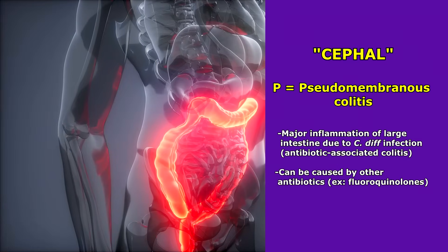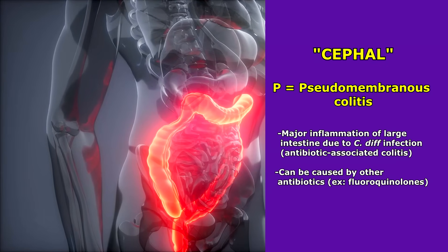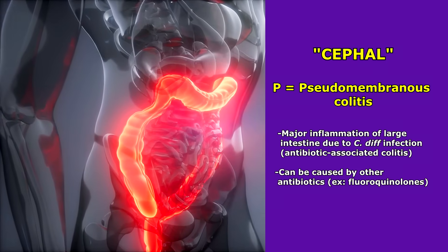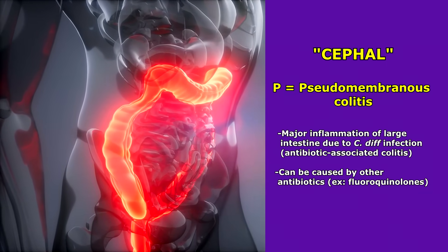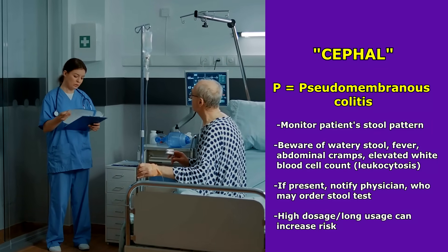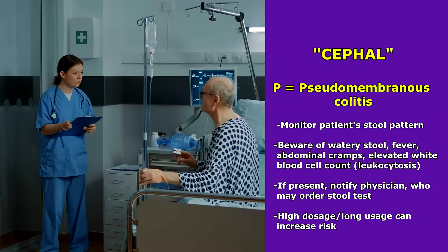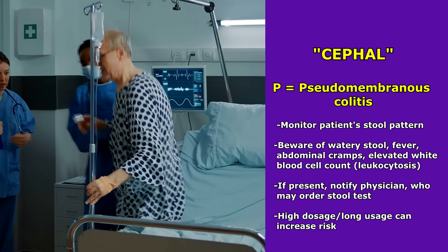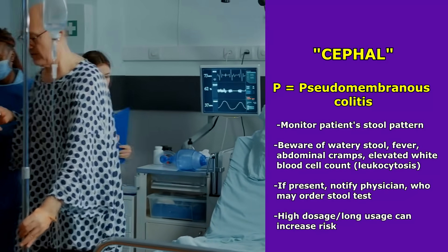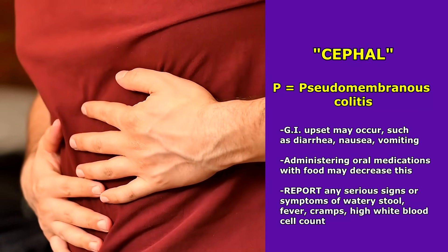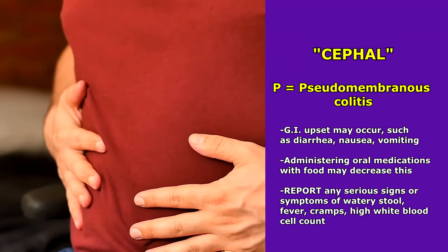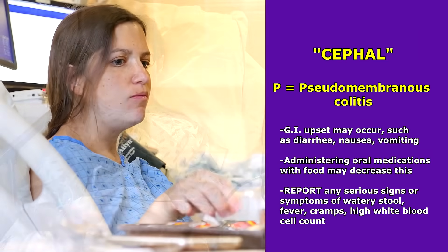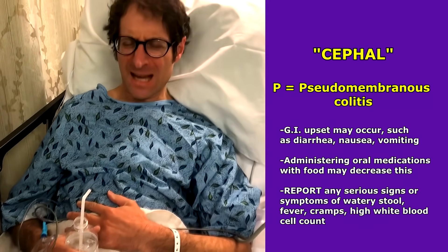P is for pseudomembranous colitis — a major infection and inflammation of the large intestine caused by a C. diff infection, also sometimes called antibiotic-associated colitis. It can be caused by other antibiotics such as fluoroquinolones. To monitor for this as a nurse, assess your patient's stool pattern — make sure they're not having severe watery stool along with fever, abdominal cramps, and an elevated white blood cell count (leukocytosis). If they are, notify the physician, who may order a C. diff stool test. Note that these medications can also cause general GI upset like vomiting, diarrhea, and nausea, and administering oral medications with food may help decrease this.